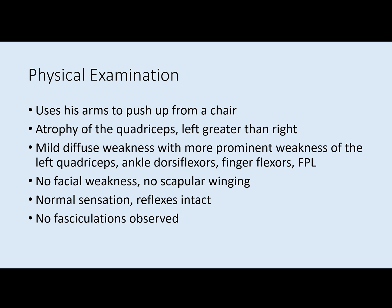On examination, he does have to use his arms to push up from a chair. He has some atrophy of the quadriceps which is more pronounced on the left. He has mild diffuse weakness with more noticeable weakness in the left quadriceps, ankle dorsiflexors, finger flexors, and thumb flexors. He does not have any facial weakness or scapular winging. He has normal sensation and reflexes and no fasciculations were seen.